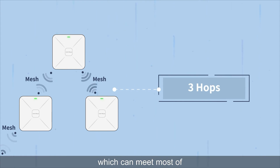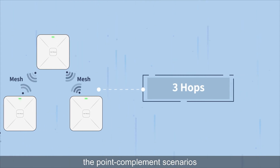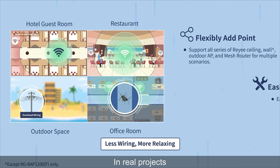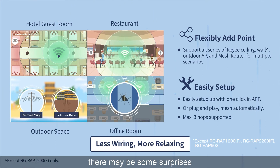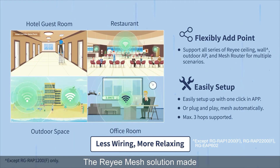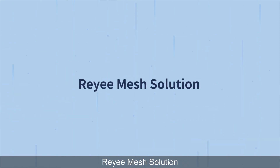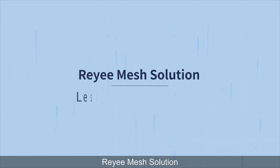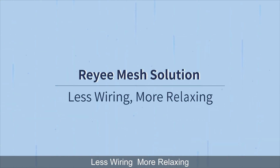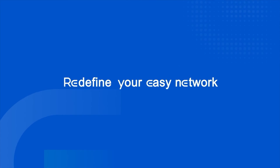The Reyee Mesh solution supports a maximum of three hops, which can meet most point-to-complement scenarios in real projects. There may be some surprises — Reyee Mesh makes adding extra points much easier. Reyee Mesh solution: less wiring, more relaxing.